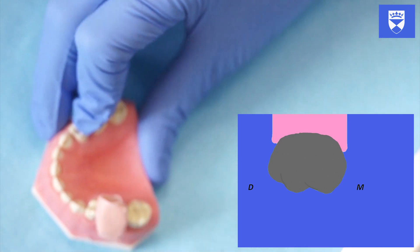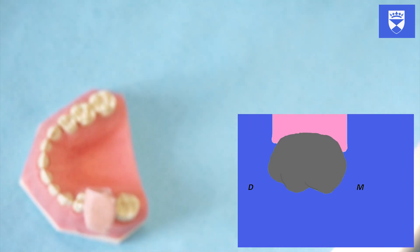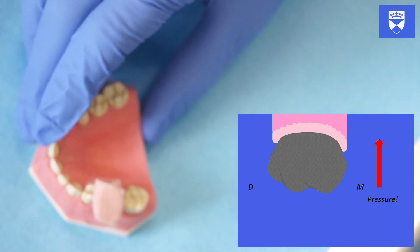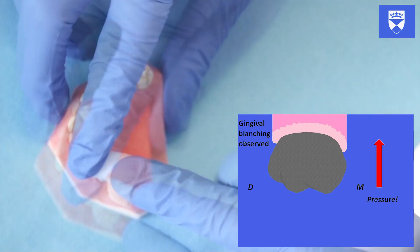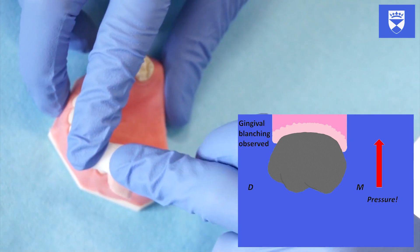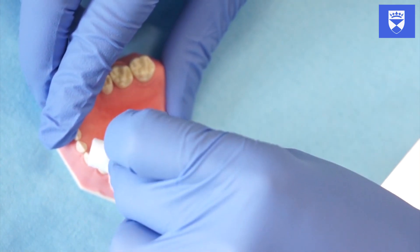Instruct the patient to bite once more or push down on the crown with your finger again. The crown will seat further. After a further 30 seconds to 1 minute, remove the cotton wool roll and elastoplast.